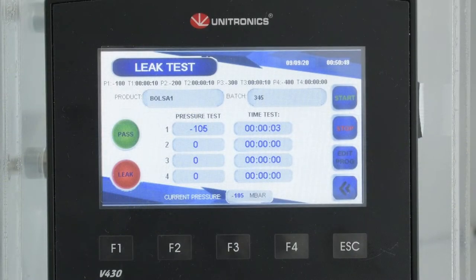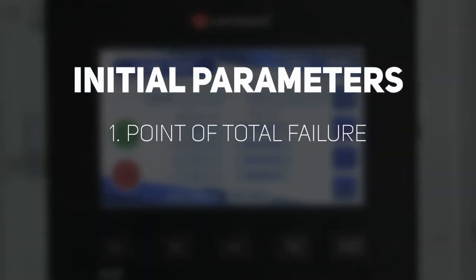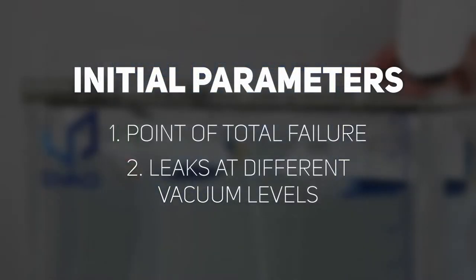However, since the norm does not specify the level of vacuum necessary to detect those leaks, we need to find two initial parameters: point of failure and leaks at different vacuum levels.